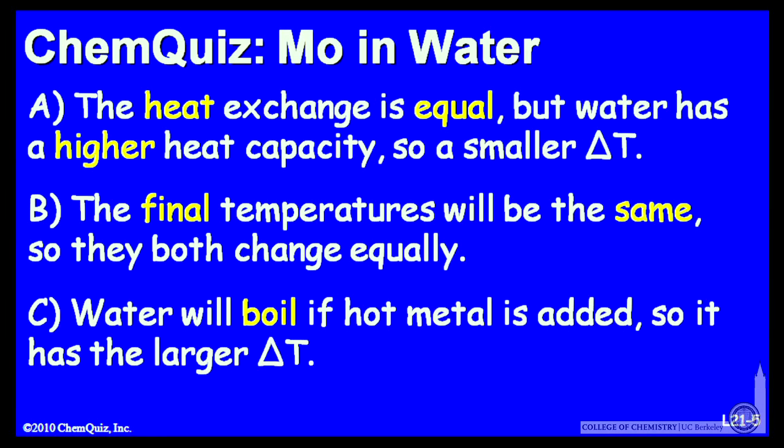Let's look at a possible explanation for each answer. A: the heat exchange is equal, but water has a higher heat capacity, so it'll have a smaller change in temperature. B: the final temperatures will be the same, so they'll both change equally. Or C: water will boil if hot metal is added, so it will have the larger change in temperature. Think about those three and make a selection.